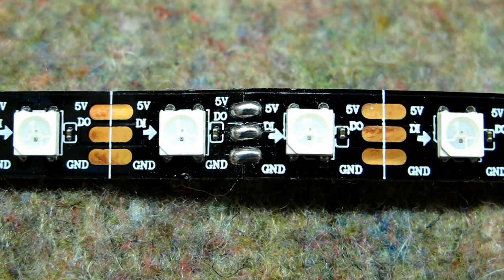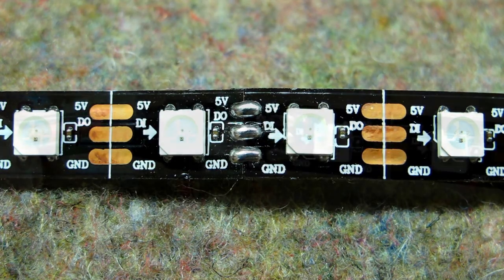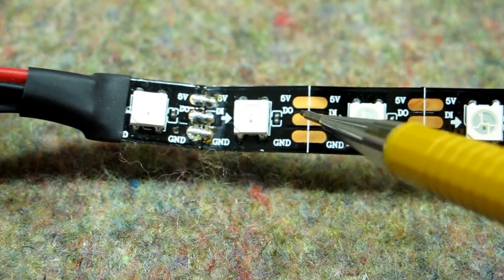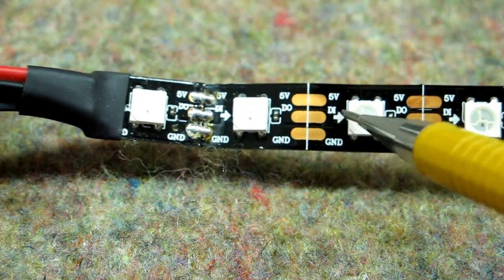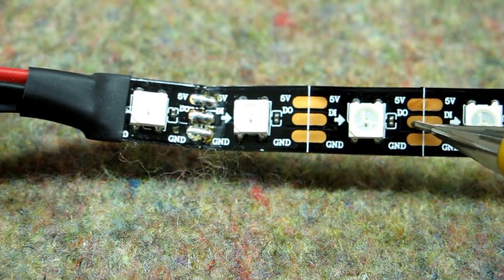These are made up of 500 millimeter lengths so there is a solder joint every half meter. There are two sides to these LEDs. You get the 5 volt and the ground but this side is signal in and this side is signal out.